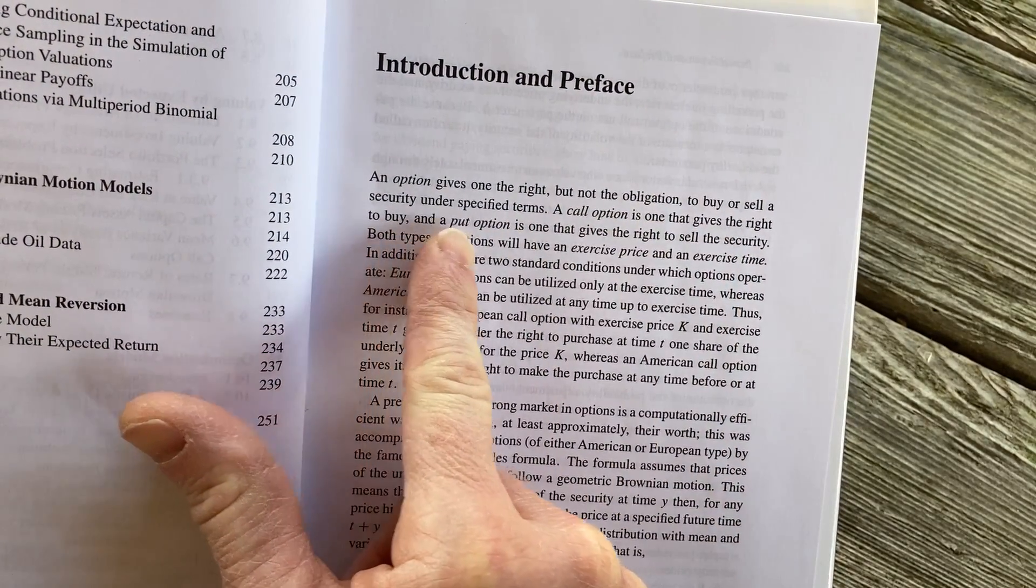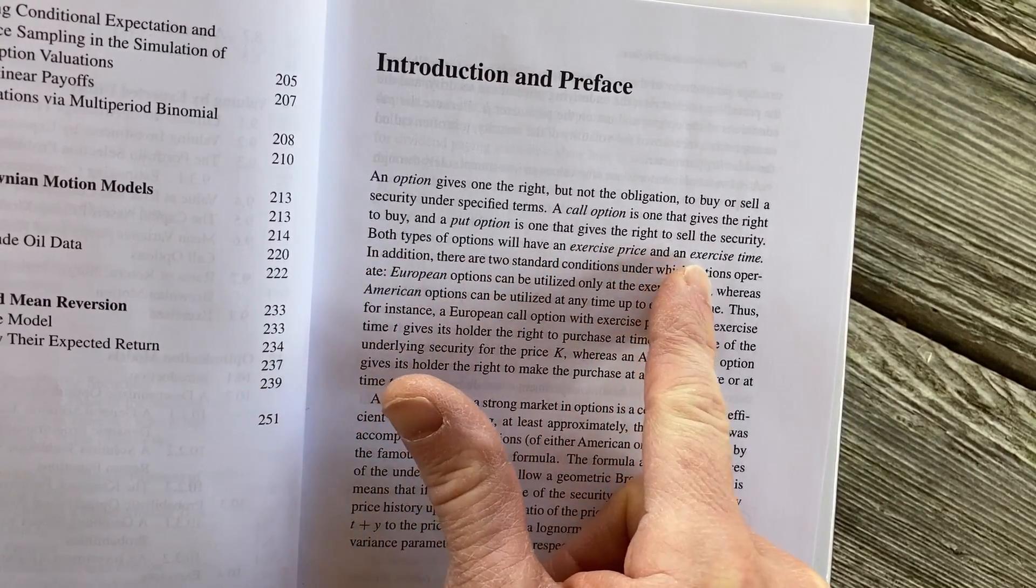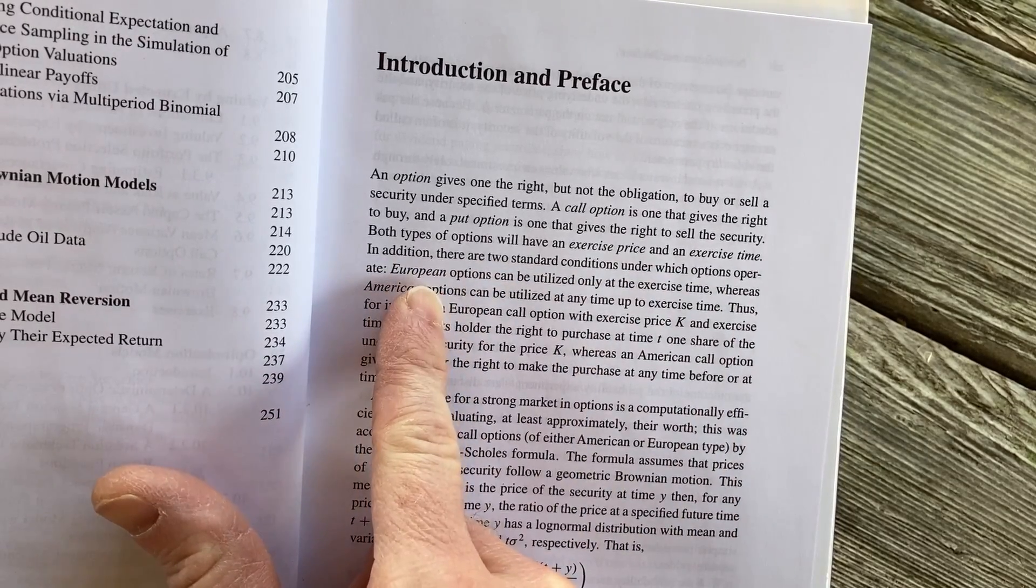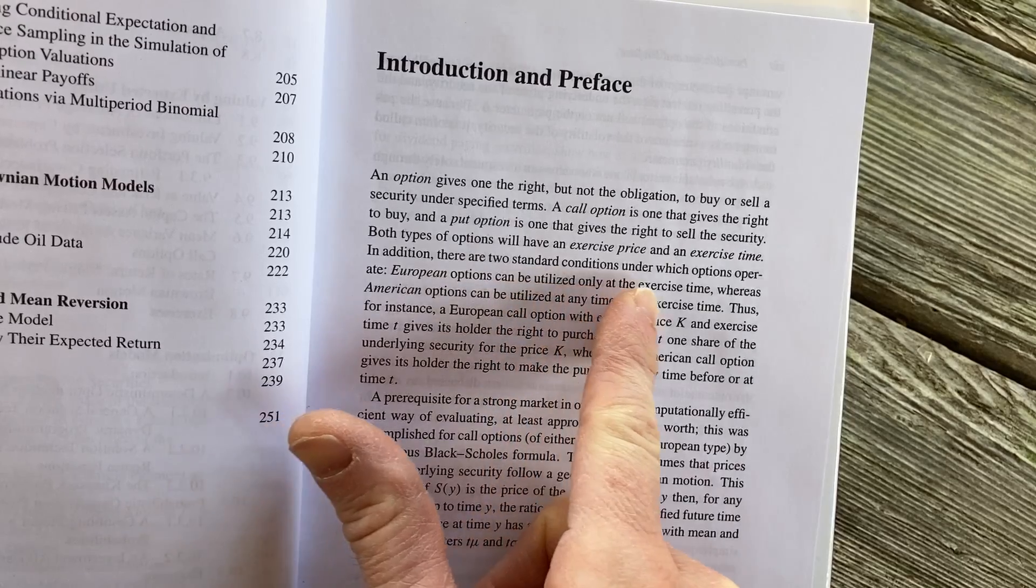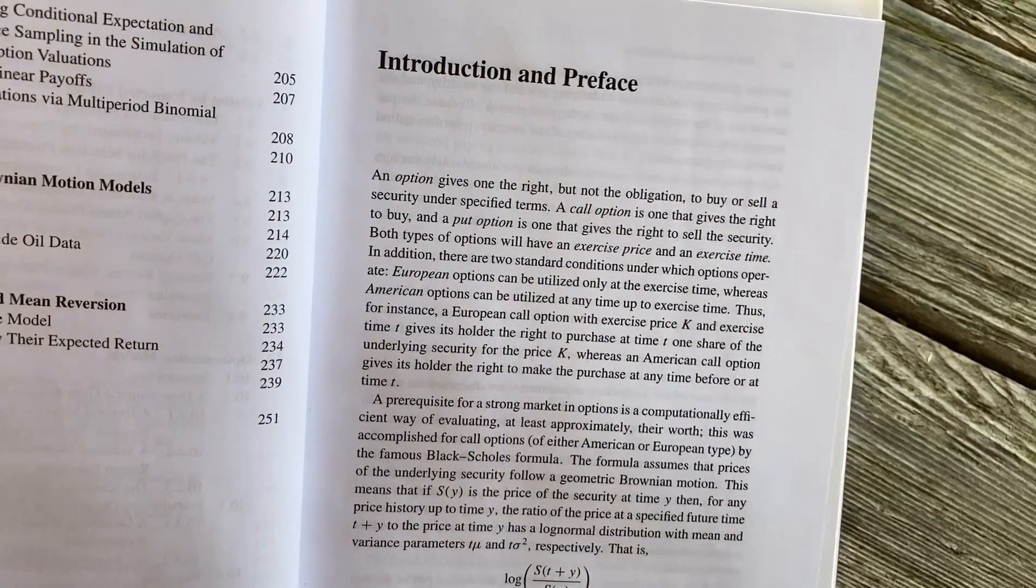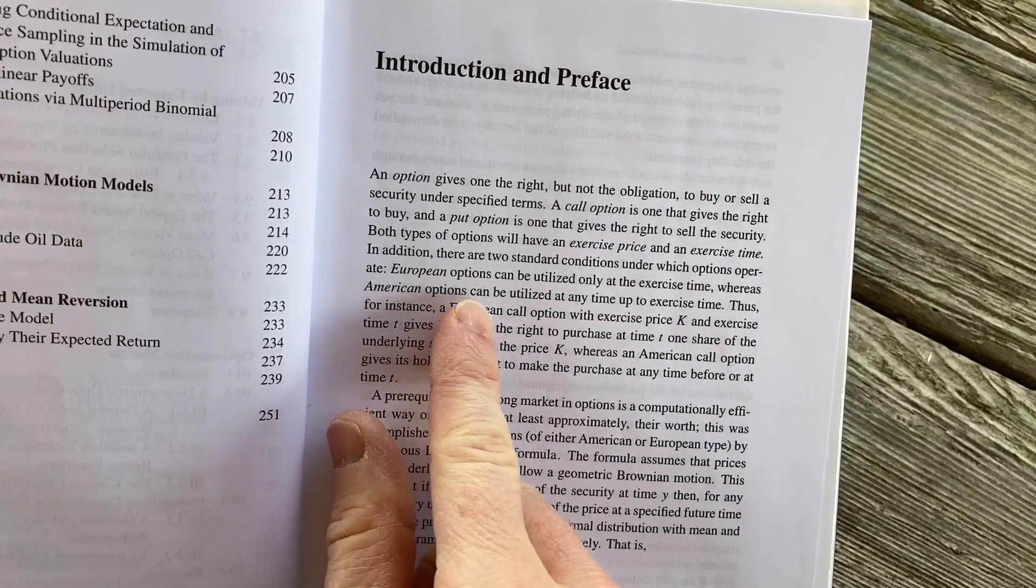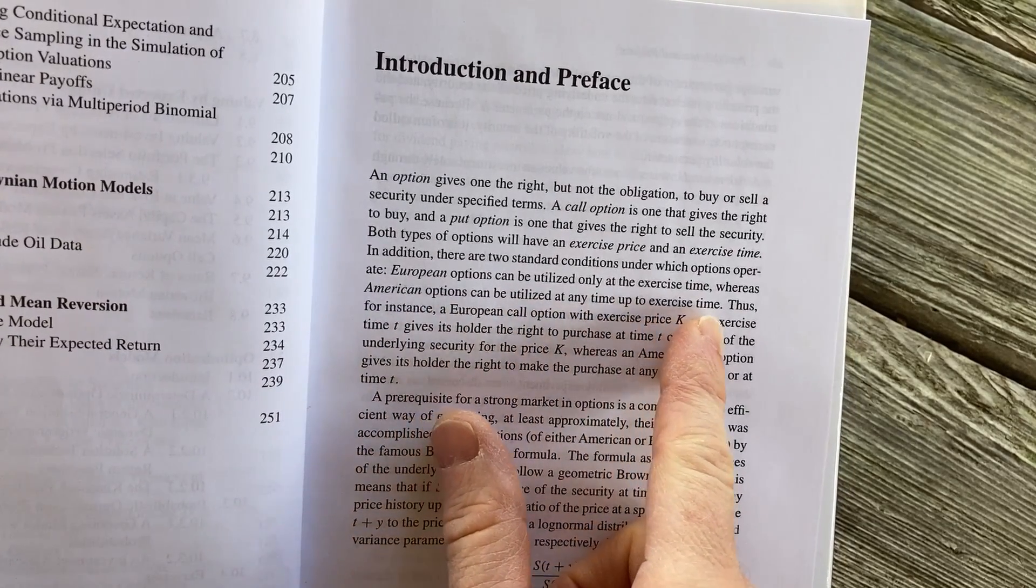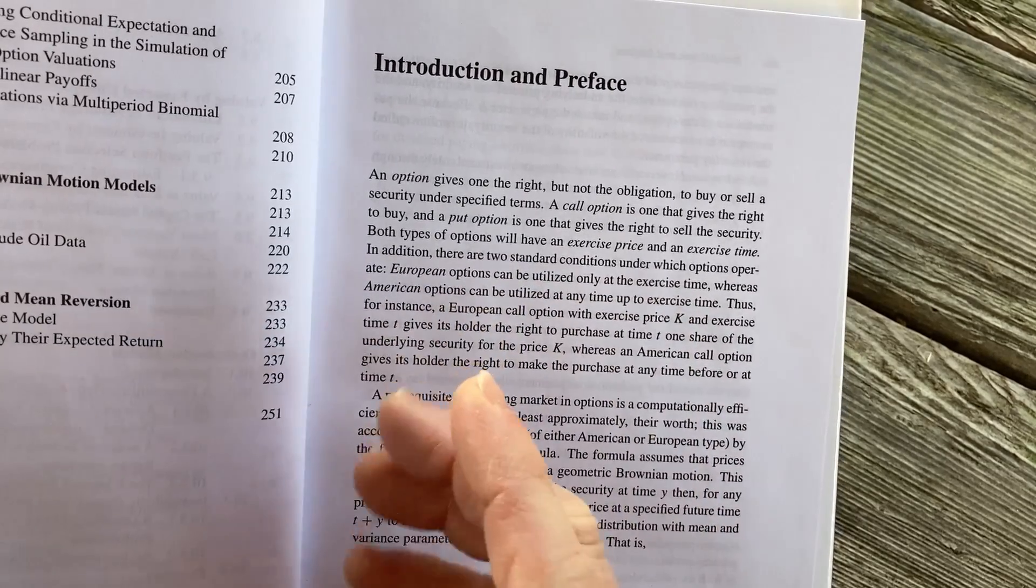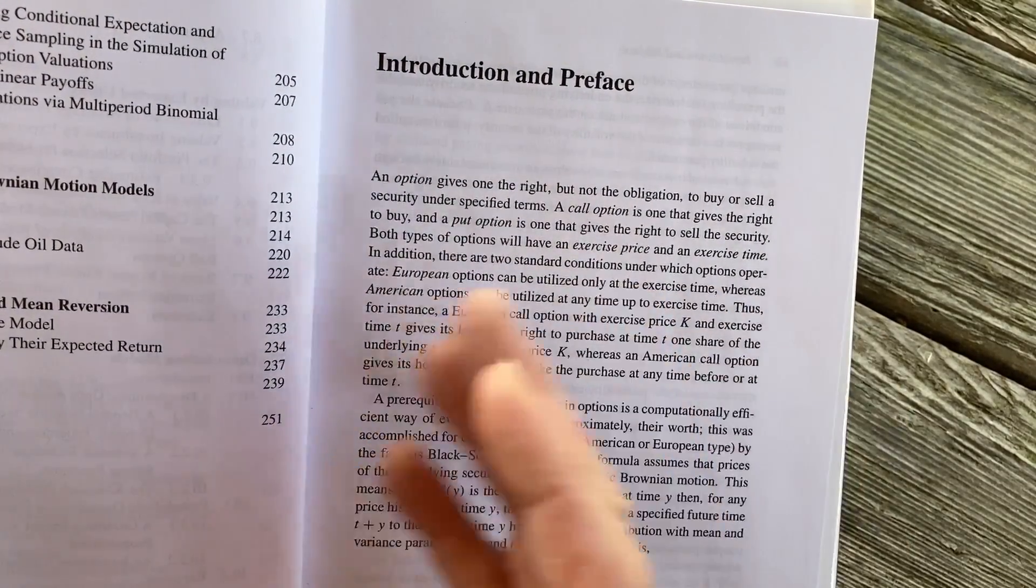A call option is one that gives the right to buy, and a put option is one that gives the right to sell. Both types of options will have an exercise price and an exercise time. In addition, there are two standard conditions under which options operate. European options can only be utilized at the exercise time or often called at expiration. So on expiration day. So if it expires, let's say May 15th, that's when you can exercise your option on May 15th. Whereas American options can be utilized at any time up to exercise time. So American options are a little bit different. So anytime up to exercise time, the holder of that option can choose to exercise it. So they can choose to buy or sell the stock or the futures contract.